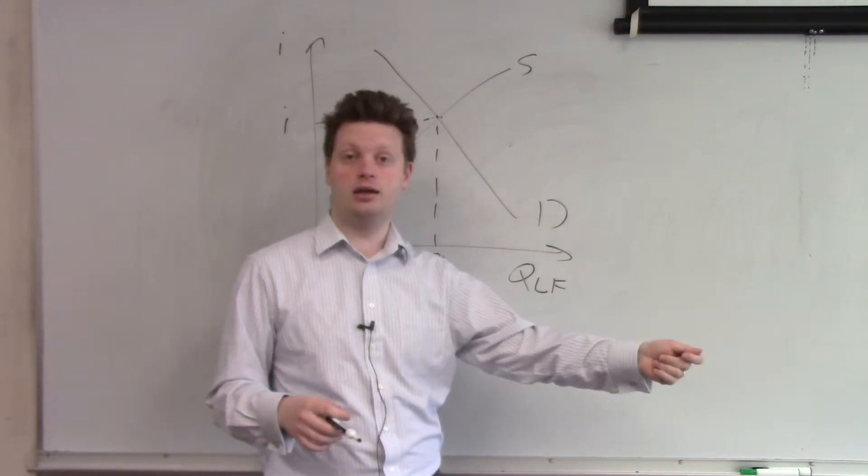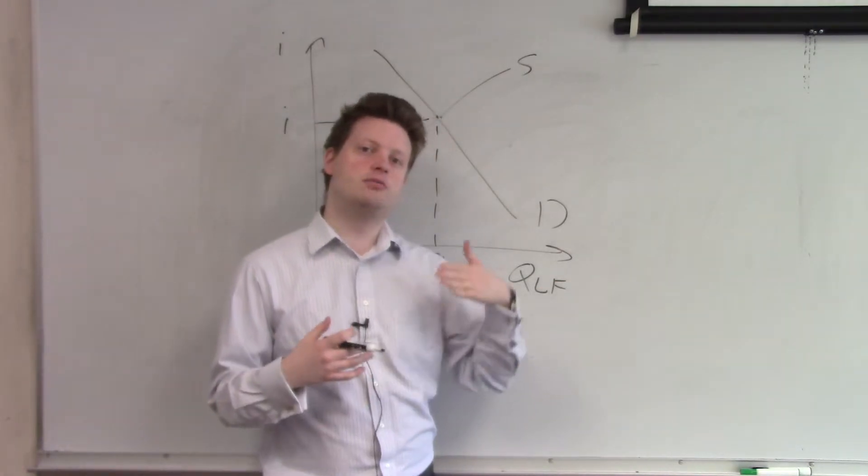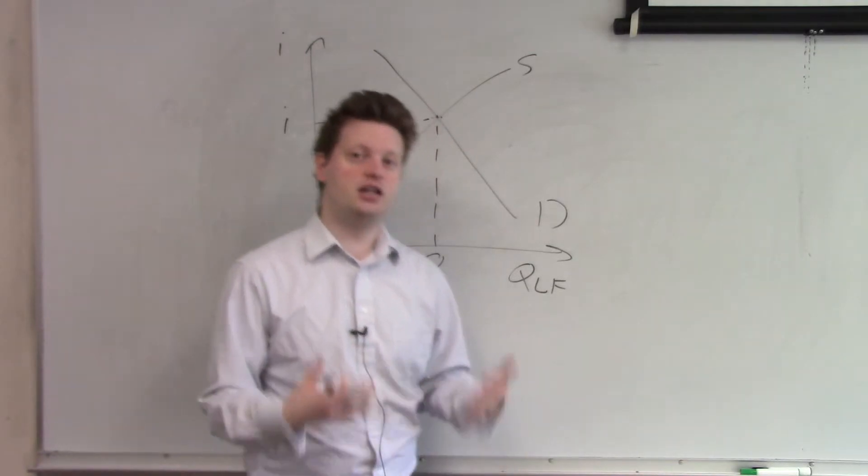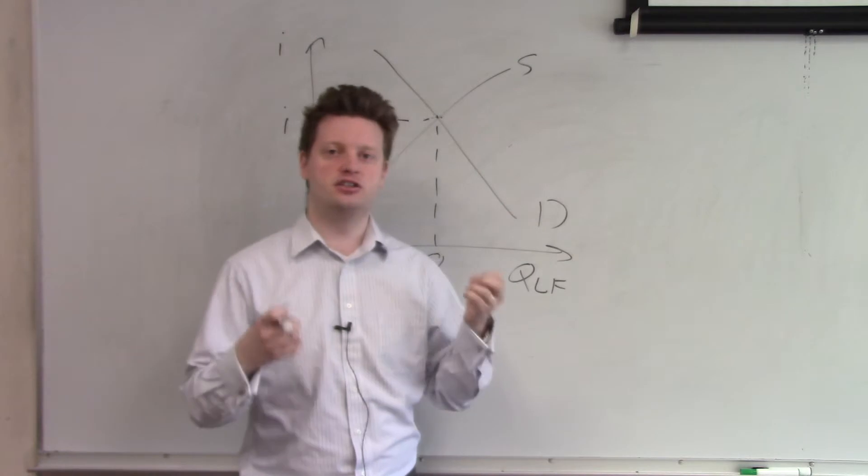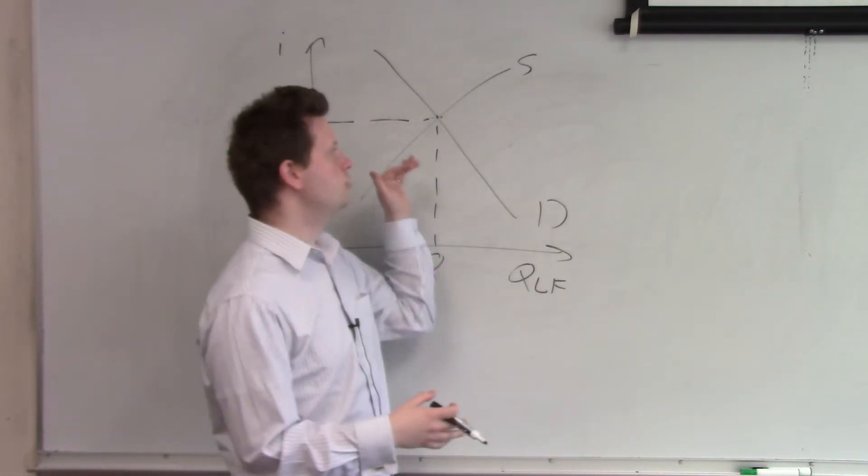If I give my money to a company, well, they might default. So I might lose my money. So I'm not necessarily as willing to give them the money. Because of that, it is assumed in this model that any funds the government wants are immediately satisfied by households.